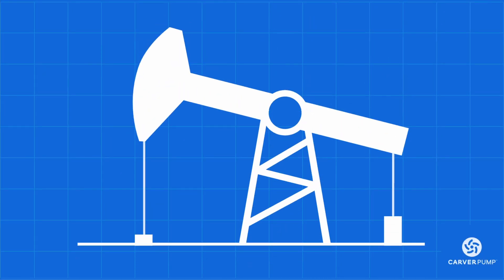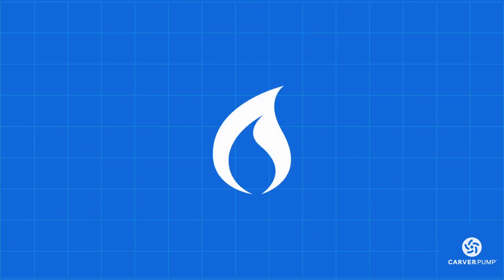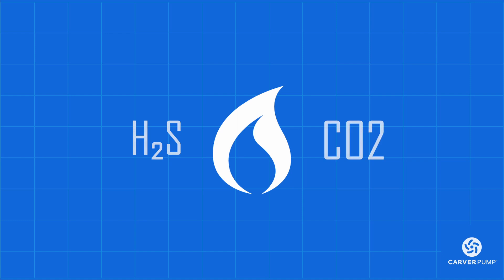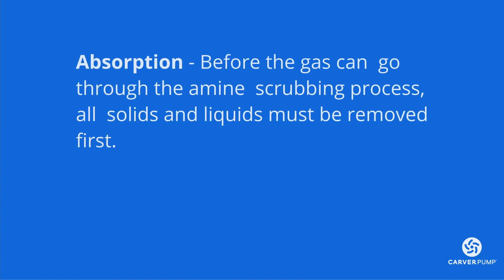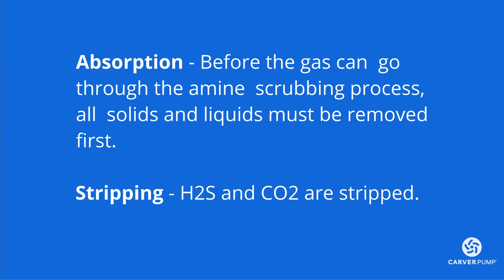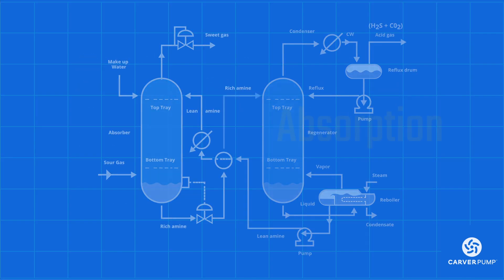Amine sweetening is an important process in the oil and gas industry. With it, natural gas is stripped of its hydrogen sulfide and carbon dioxide, preparing the gas for sale or further processing. In this video, we're going to have a look at some of the inner workings of amine sweetening — in particular, how the absorption and stripping system works.